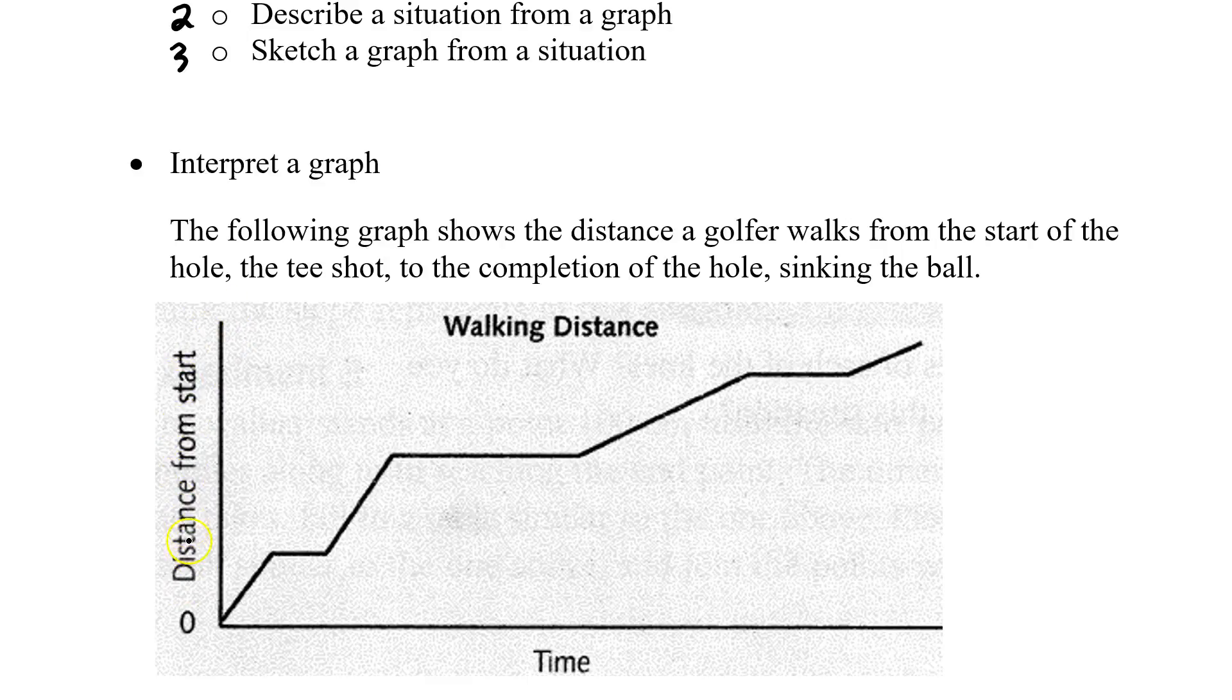Here's a graph that shows one golfer's hole. So we see we got the y variable, distance from the start, dependent variable. We've got time as our x variable, our independent variable. And we've got a series of graphs.